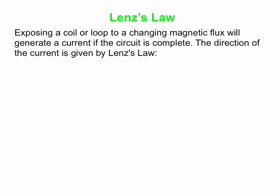So what is Lenz's Law? We already know that Faraday's Law says: exposing a coil or a loop to a changing magnetic flux will generate a current if the circuit is complete — it certainly generates a voltage, and if we have a complete circuit then we also get a current. The direction of the induced current is given by Lenz's Law. This is actually all about the minus sign that's in Faraday's Law.